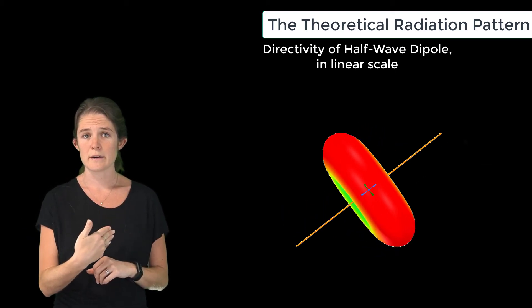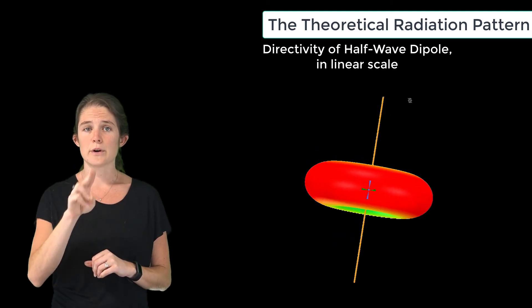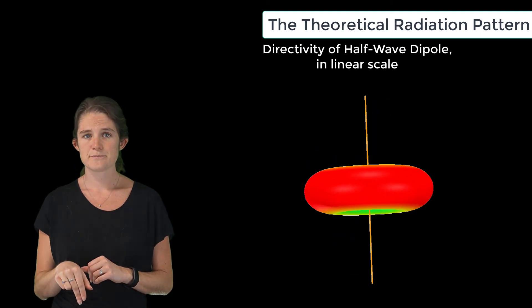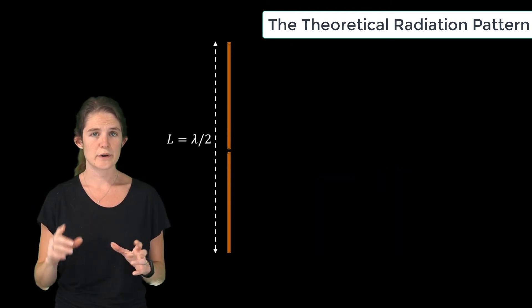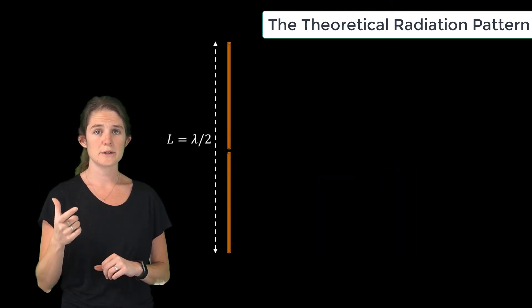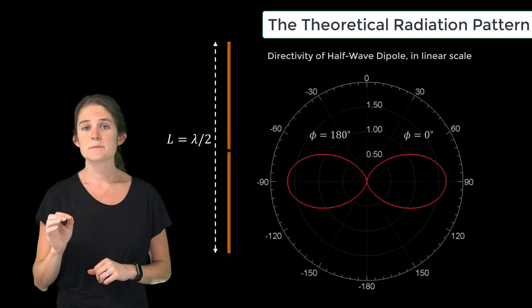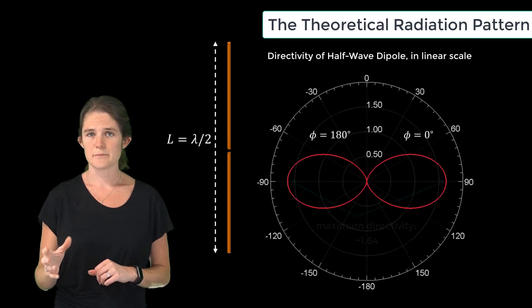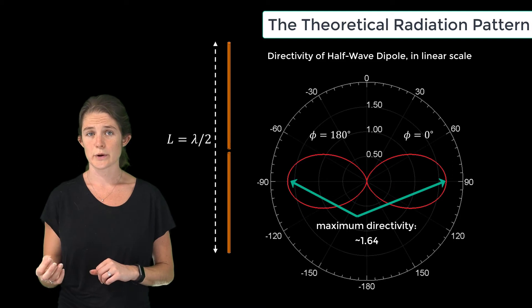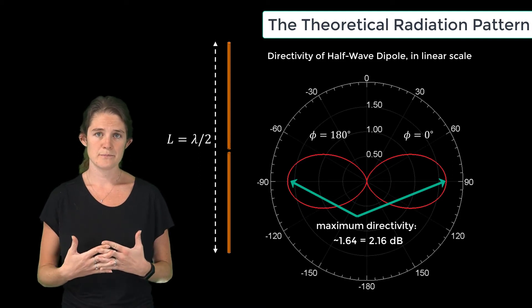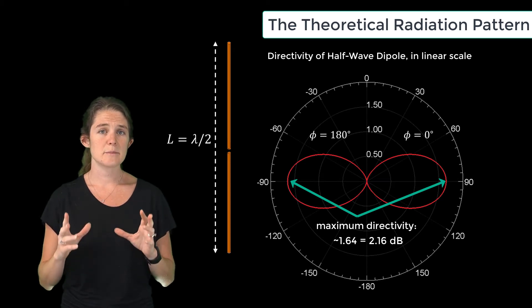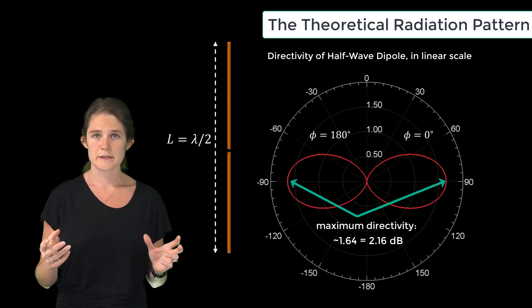At the design frequency where the length L of the antenna is equal to half wavelength, the maximum directivity of the dipole antenna is approximately 1.64 in linear scale or 2.16 dB. Remember that this can easily be increased by adding reflector and director elements, as we saw at the Yagi-Uda antenna.